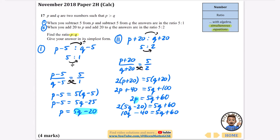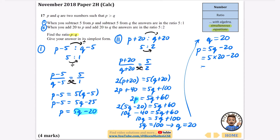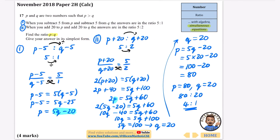Adding 40 to both sides: 10q = 5q + 100. Subtracting 5q: 5q = 100, so q = 20. Then going back to p = 5q − 20, that's 5 × 20 − 20 = 100 − 20 = 80. So p = 80 and q = 20, and the ratio p to q is 80 to 20, which simplifies to 4 to 1. Correct.